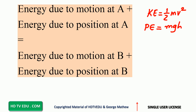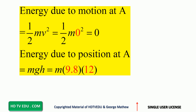Energy due to motion at B is kinetic energy: one half mv squared. Energy due to position at B is mgh, but we are at the zero level, so h is zero. That means potential energy at point B is zero.